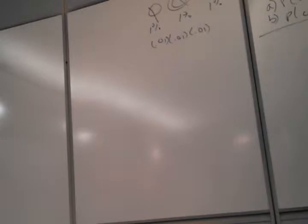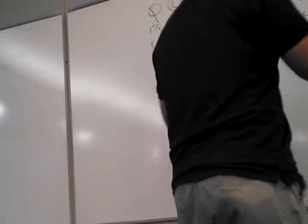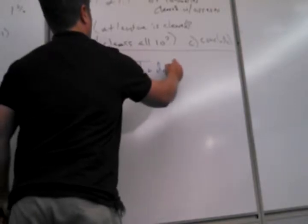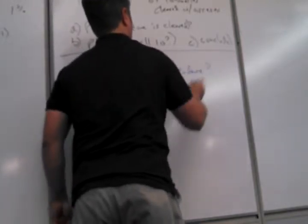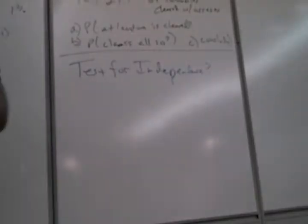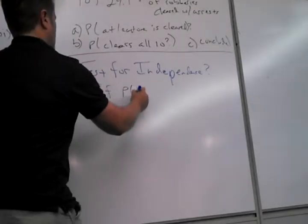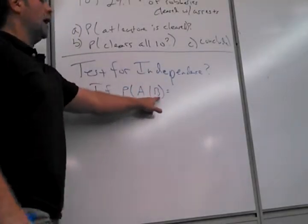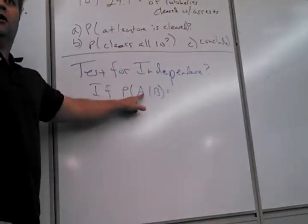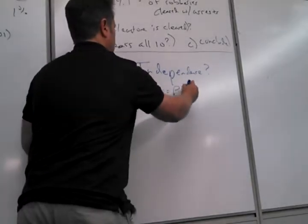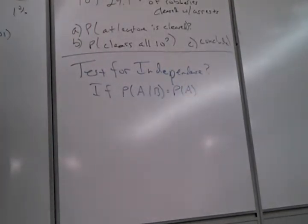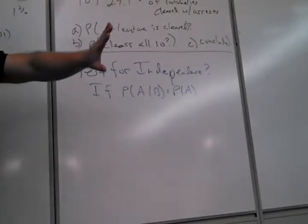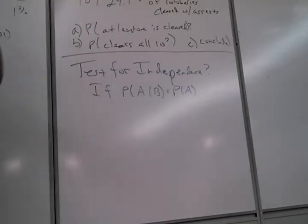Anything else from Chapter 4? Can you go over the test for independence? So what is it that I have to check to see if two things are independent? What is the test for independence? If the probability of A given B — so B happens and A doesn't care — which means A's probability would stay the same. If B happens and A does not change, doesn't it make sense that that means they're independent? They don't care about each other. One does not affect the chances of the other one happening.